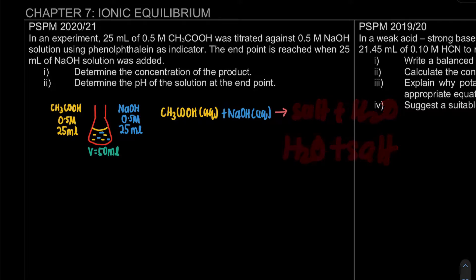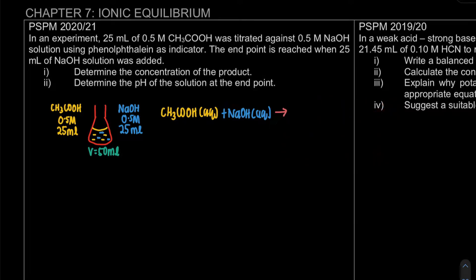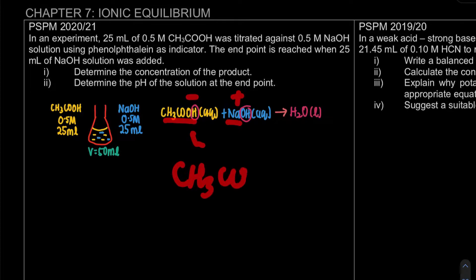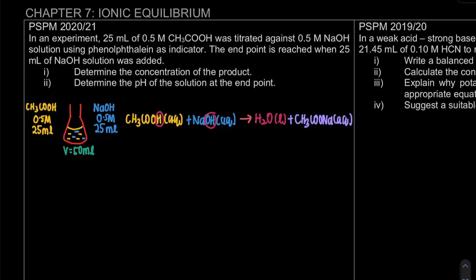The H plus from the acid and OH minus from the base combine to form H2O liquid. What is left is CH3COO minus and Na plus, which combine to form the salt CH3COONa (aqueous). So this is our balanced equation.